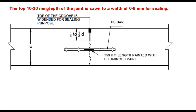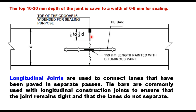The top 10 to 20 millimeters depth of the joint is cut to a width of 6 to 8 millimeters for the purpose of sealing. Initially the joint is cut to a depth of one-third to one-fourth of the slab thickness, and then it creates a crack in the full depth of the concrete slab. Longitudinal joints are used to connect lanes that have been paved in separate passes, and tie bars are commonly used with these joints to ensure the joints remain tight and the lanes do not separate.